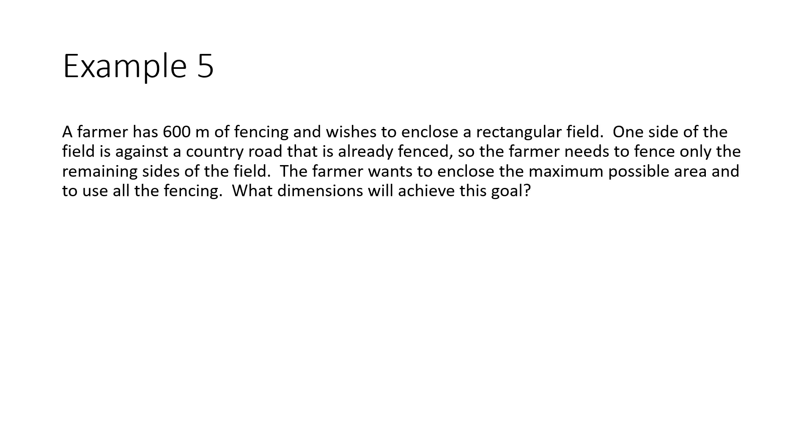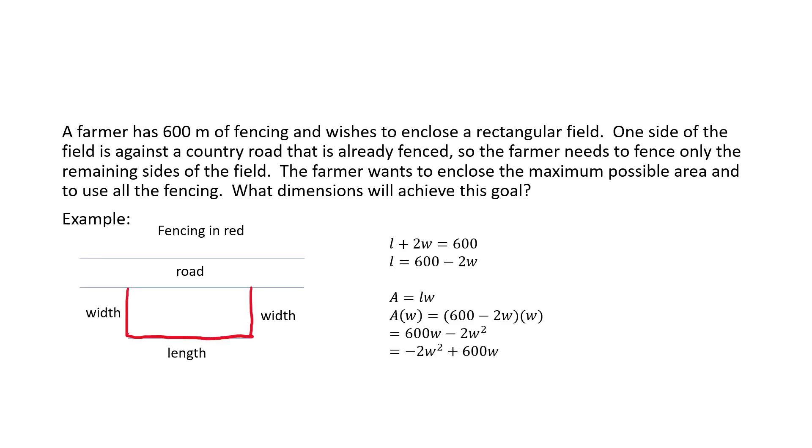In the first one, a farmer has 600 meters of fencing and wants to enclose a rectangular field, but one side of the field is against a county road that's already fenced. So the farmer really only needs to fence the remaining sides and wants to enclose the maximum area, use all the fencing.